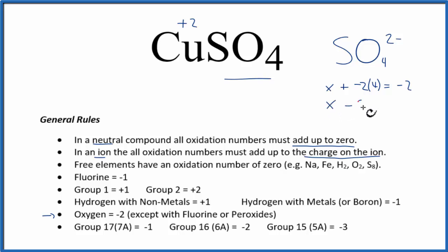So X minus eight equals minus two, X needs to equal plus six. And that's the oxidation number here on the sulfur. So those are the oxidation numbers on each of the elements in CuSO4.